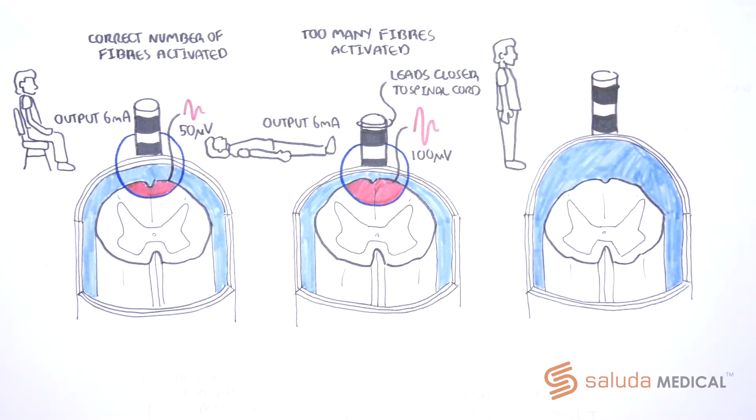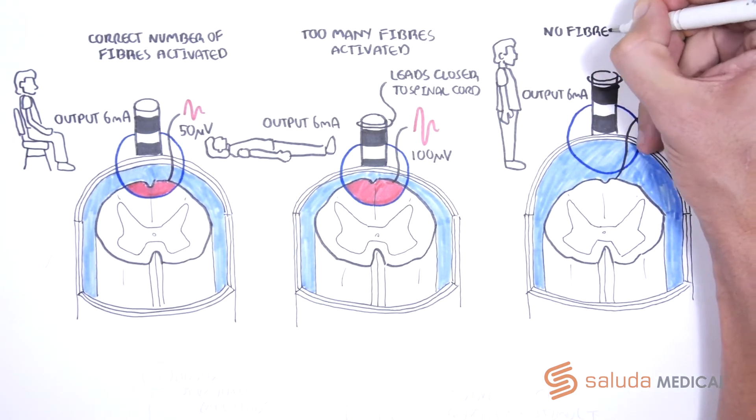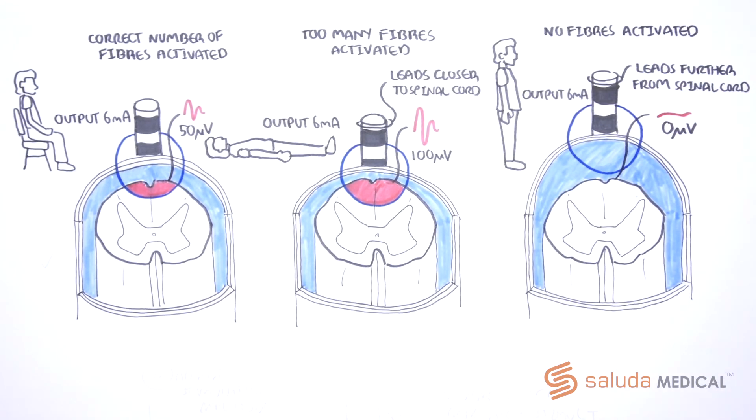In another moment, in this example with the patient standing up, the same 6mA pulse results in no activation at all, leading to no therapeutic benefit. This is due to the lead having moved further away from the cord and the activating region reaching no fibers at all.